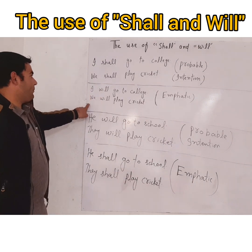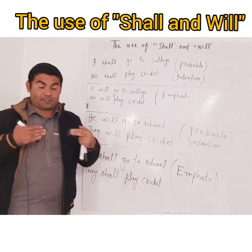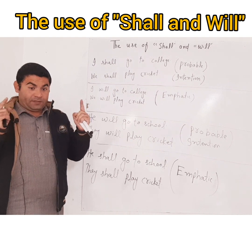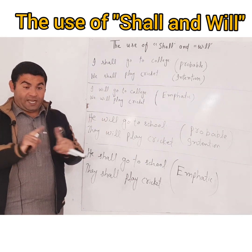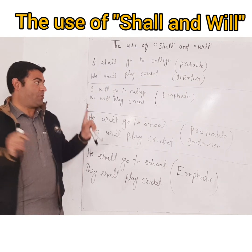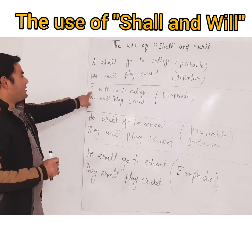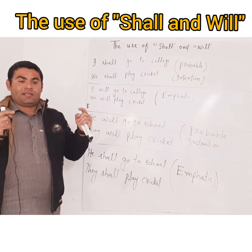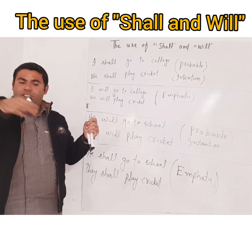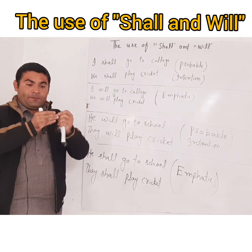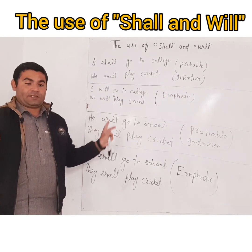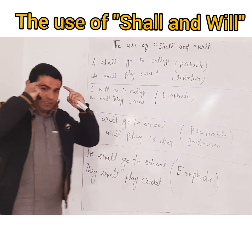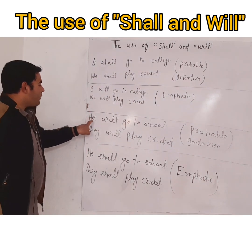But when we use 'will' with 'I' and 'we', it becomes emphatic. Emphatic means you are 100% sure and determined — rain or shine, at any cost, in any situation, you will do that. For example: 'I will go to school' means you are 100% determined. It doesn't matter if it is raining, sunny, or if you are sick — you will go to school. 'We will play cricket' — same emphatic meaning, you are determined to do that.